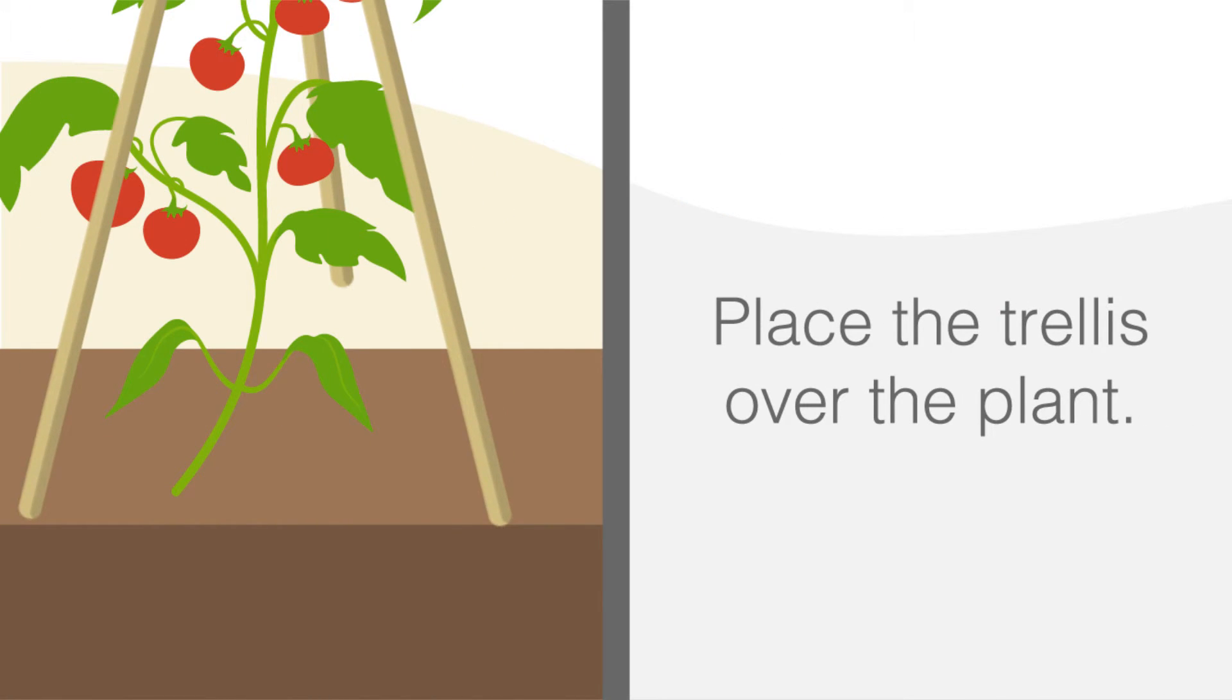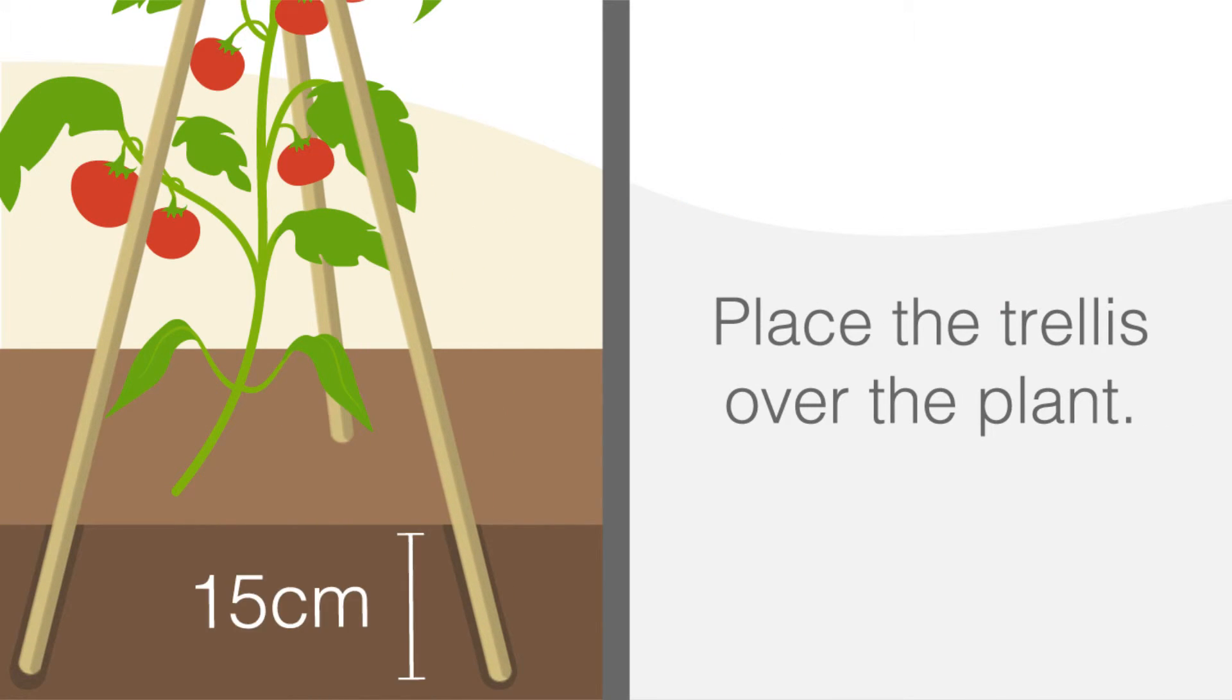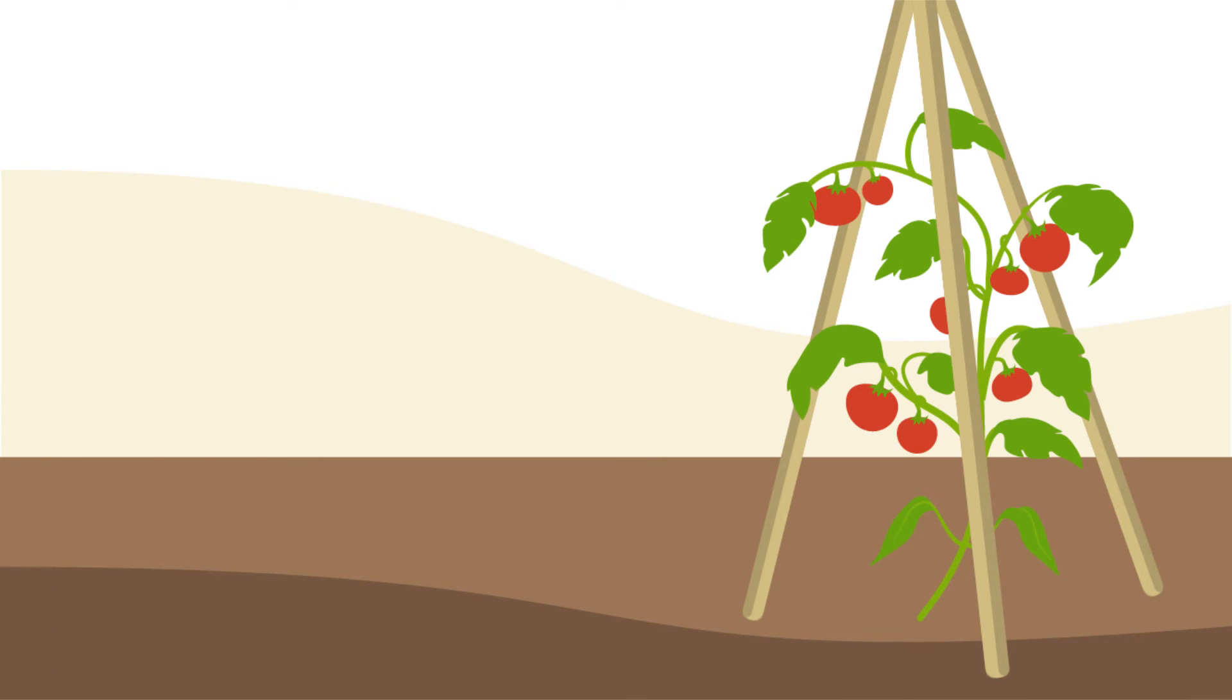Place the trellis over your plant. Dig the legs of the tripod fifteen centimeters into the soil to secure the trellis. Be careful not to damage plant roots. A tripod trellis is best for tomatoes.